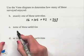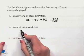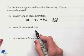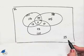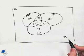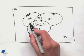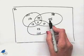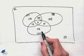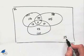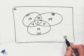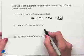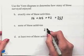Part C: how many enjoyed none of these activities? To say they enjoyed none means they would not be included in any of the three circles. That's the region outside all three circles, and that answer is 25.